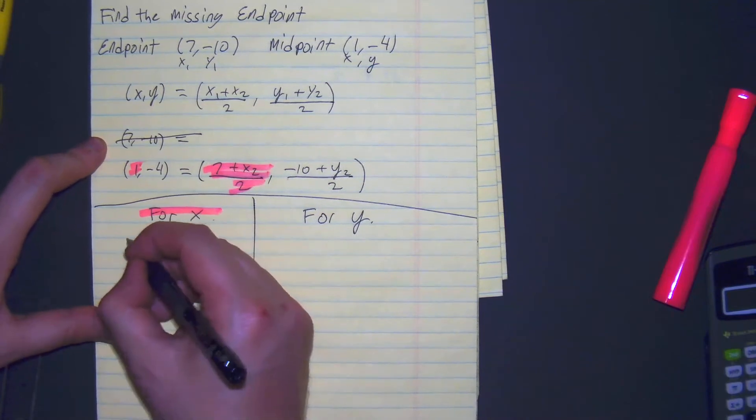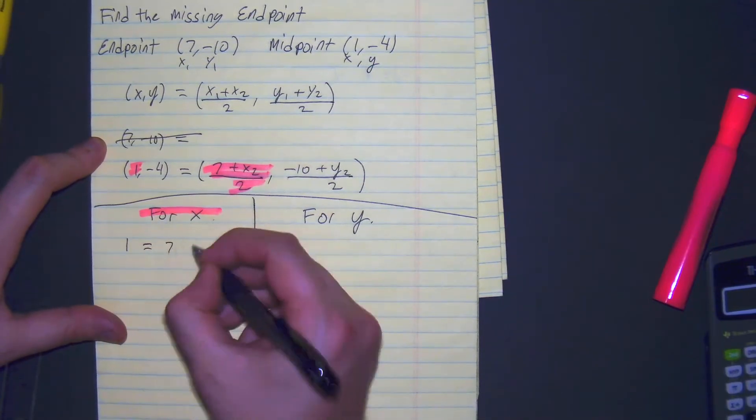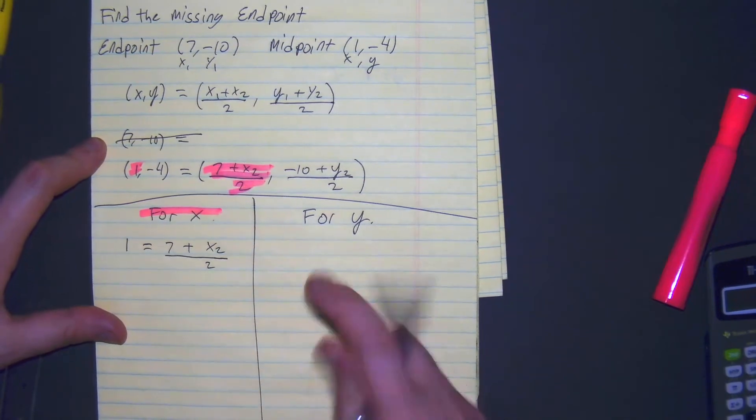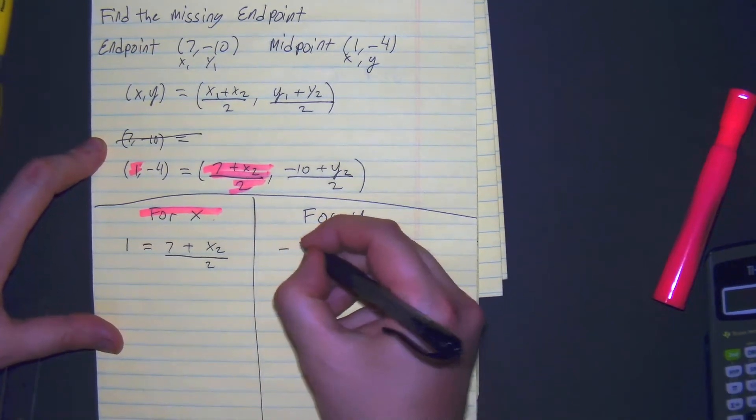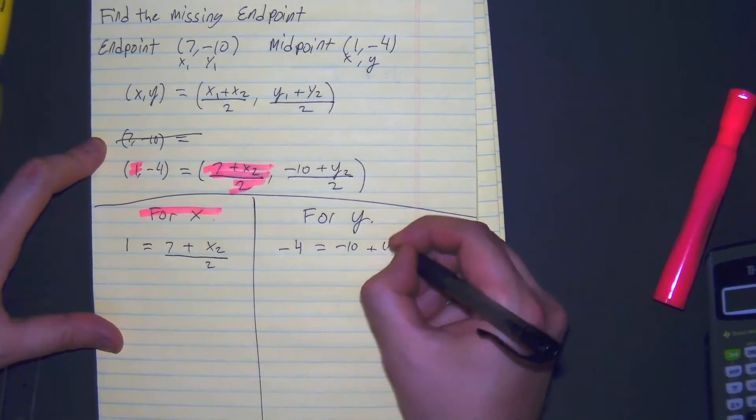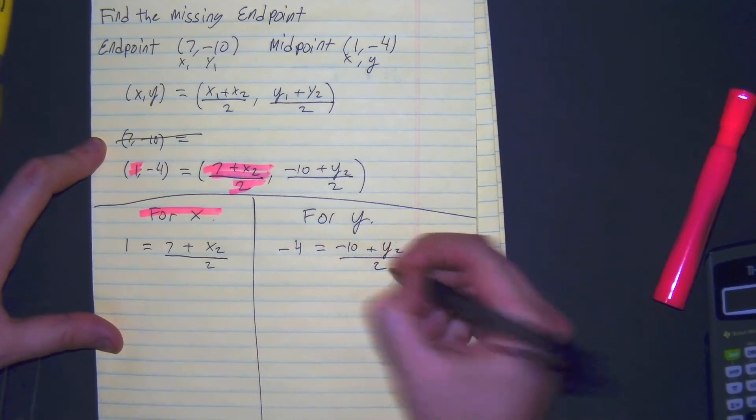Plug it on in. 1 is equal to 7 plus x2 divided by 2. And for our y, negative 4 is equal to negative 10 plus y2 divided by 2.